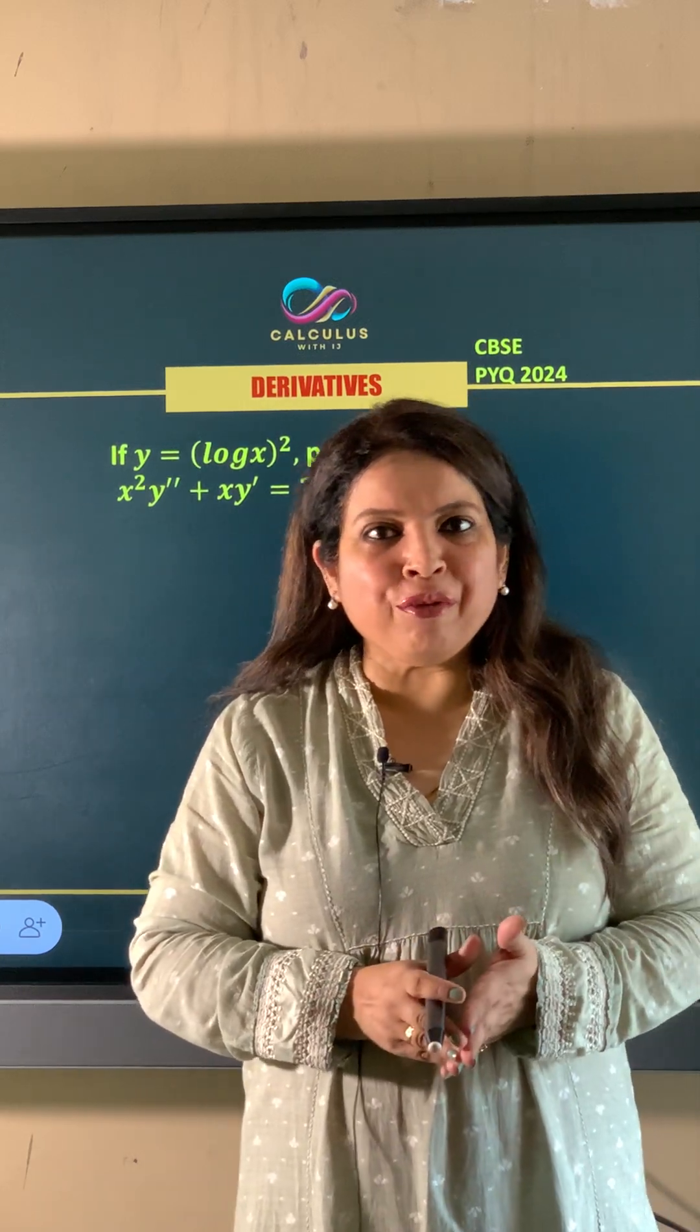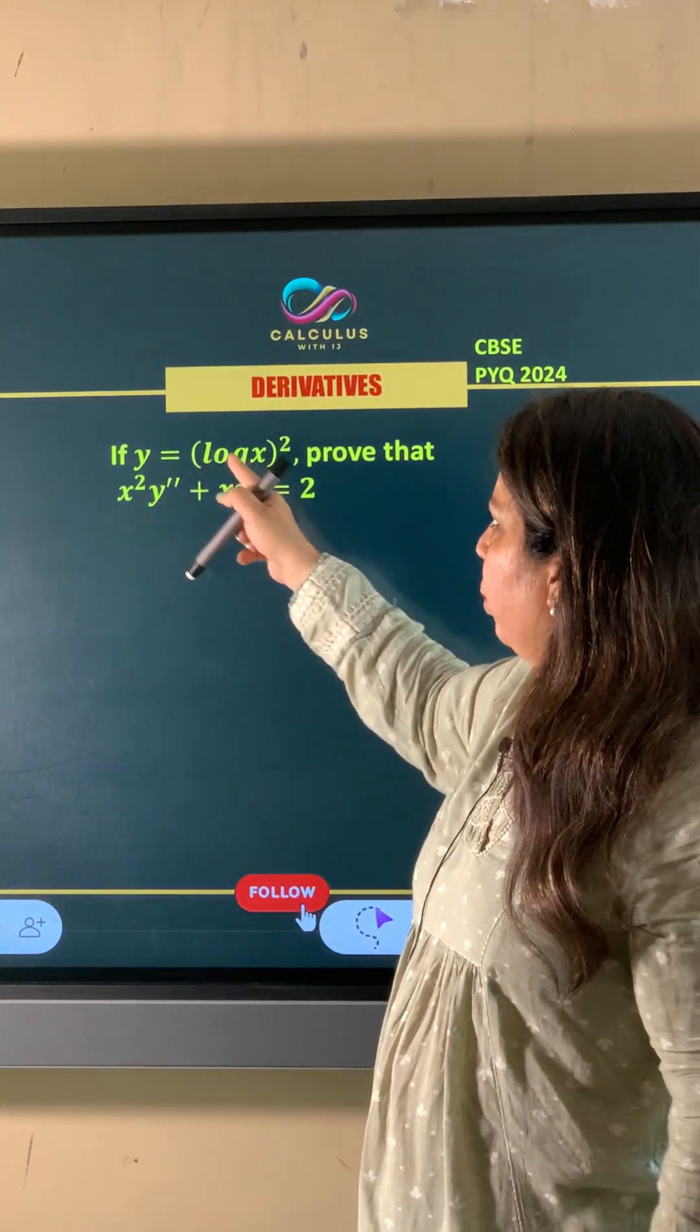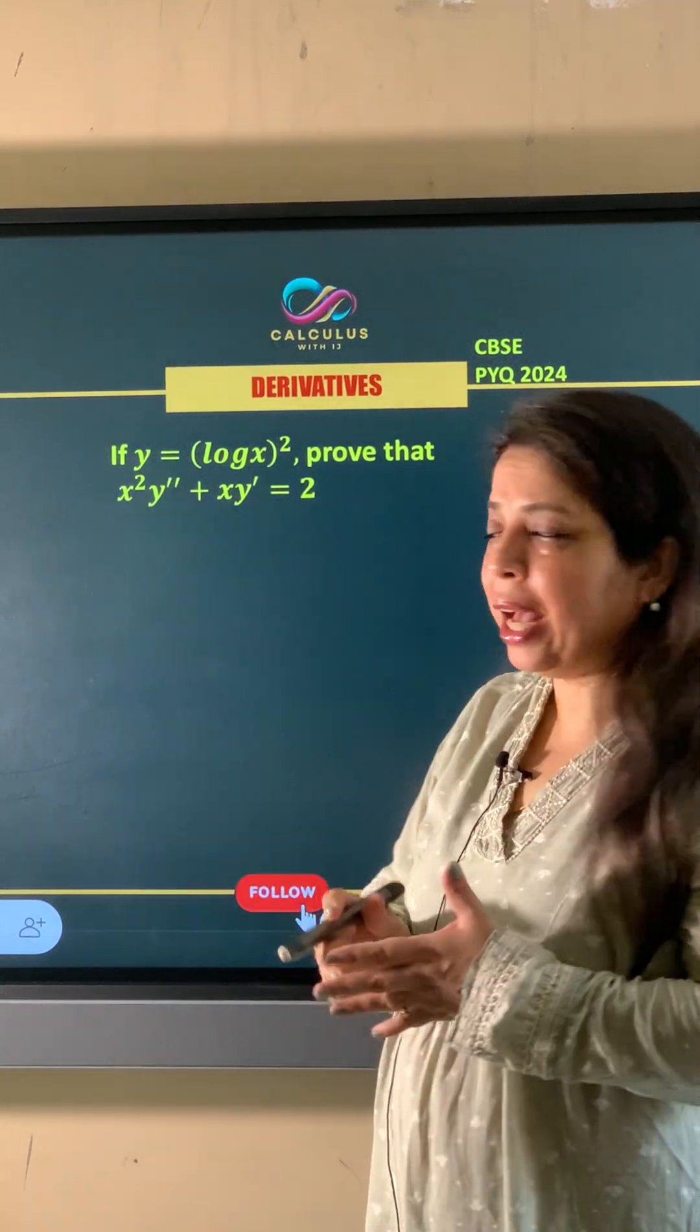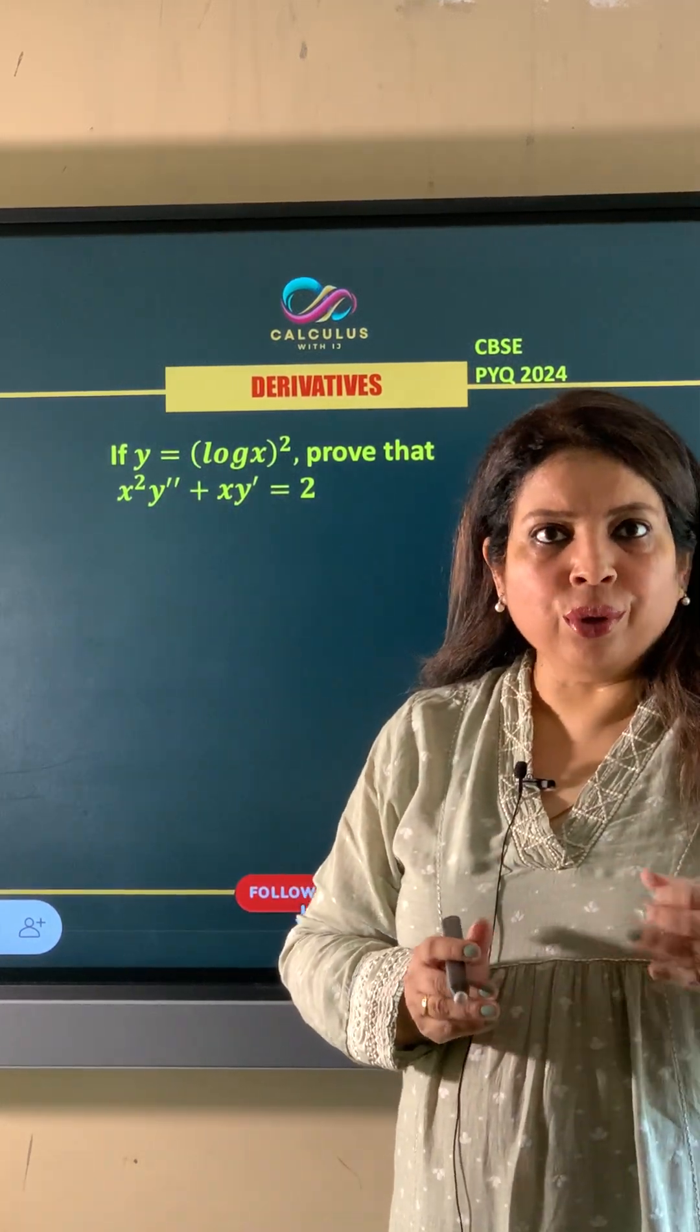So, CBSE ka 2024 ka PYQ hai. Y is equal to log X whole square and we need to prove that X square Y double dash plus XY dash is equal to 2.